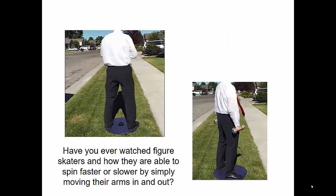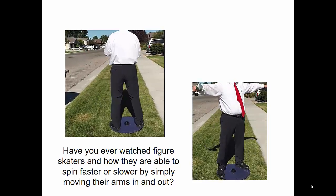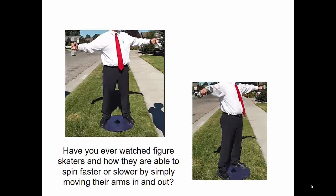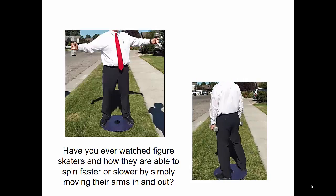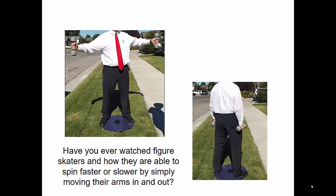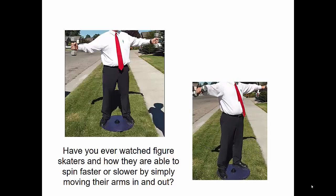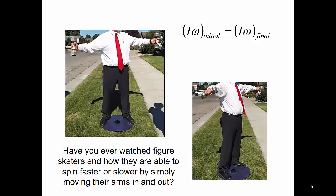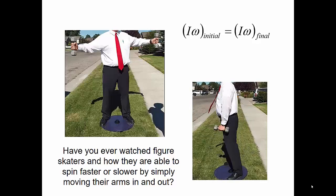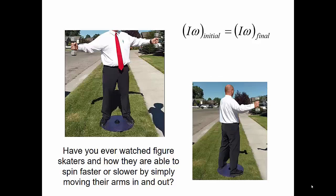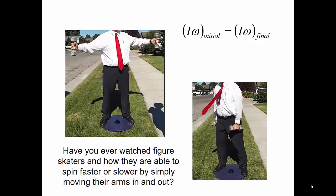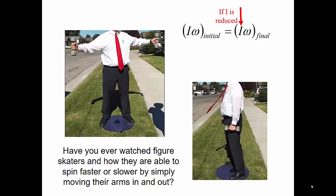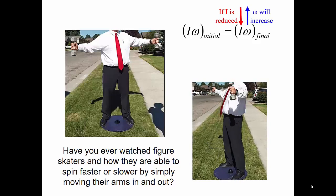Here are a couple of examples. Have you ever watched figure skaters and how they're able to spin faster or slower by simply moving their arms in and out? As my arms move in, my angular velocity increases. This has to do with conservation of angular momentum. I have an initial mass moment of inertia and an initial angular velocity, and when I move my arms in, my mass moment of inertia changes. If my mass moment of inertia is reduced, then in order to have conservation of angular momentum, my angular velocity will have to increase.